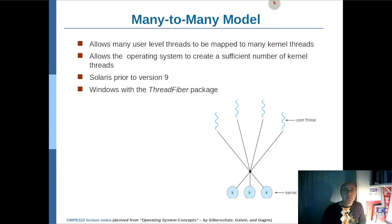Another model is the many-to-many model. This time we have multiple user threads but also multiple kernel threads, but typically not one-to-one. Typically, the number of user threads will be larger than the number of kernel threads. Of course, it's not the other way around, in that case you would have idle kernel threads. So the number of user threads is typically more than the number of kernel threads.